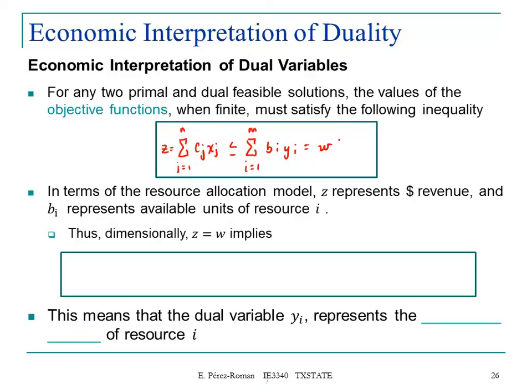Thus, dimensionally, z equals w represents the following. The revenue, so the revenue, the money, equals this: i equals 1 up to m, bi, yi.